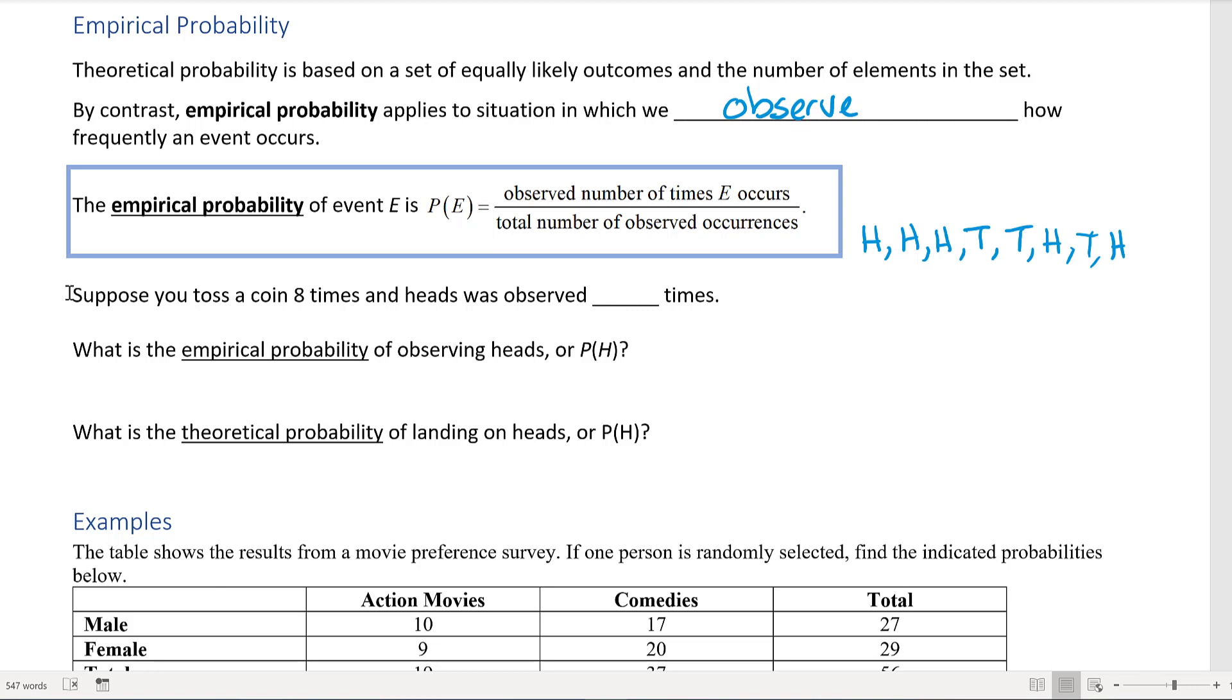Suppose you toss a coin eight times and heads was observed one, two, three, four, five times. So the empirical probability of observing heads, P(H), is equal to five out of eight because we actually observed it happening five times out of the eight tosses. What is the theoretical probability of landing on heads? Well, theoretically you're going to have one out of every toss be heads out of two chances—heads or tails.